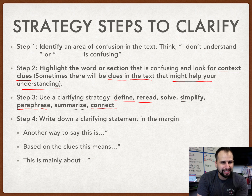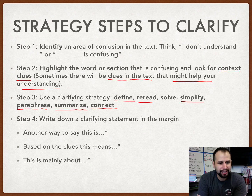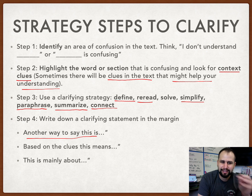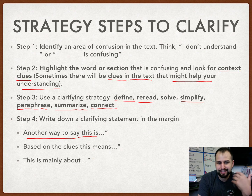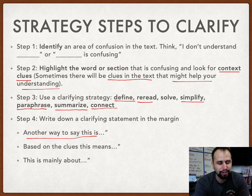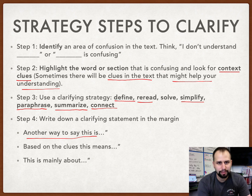Step four: after you've reread or simplified, you have a new understanding of what you were initially confused about. Now you're going to make a clarifying statement — something like: 'Another way to say this is blank,' 'Based on the clues, I think this means blank,' or 'Now that I've clarified, this mainly is about blank.' So let's get started and use these four steps to clarify things that are confusing.